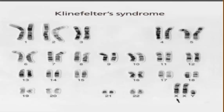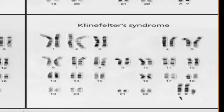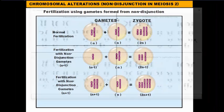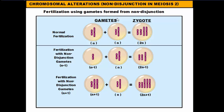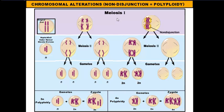That's trisomy 21 and nondisjunction in meiosis. Now when I talked about nondisjunction earlier, I also mentioned a condition called polyploidy. If you remember from the beginning of the year, we talked about prefixes like mono meaning one, di meaning two, and poly meaning three or more — like in polysaccharides. Well, polyploidy is going to be three or more sets of chromosomes.